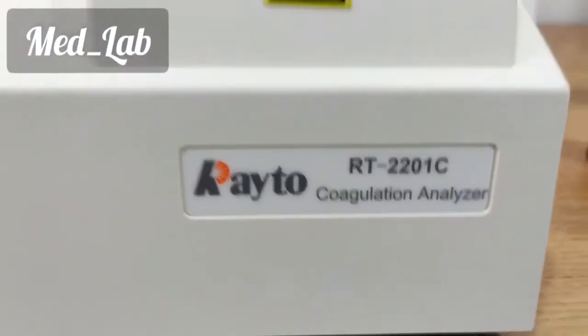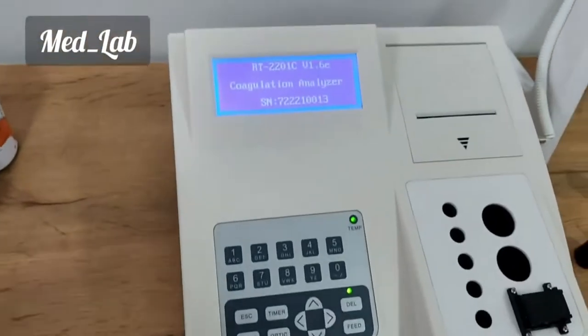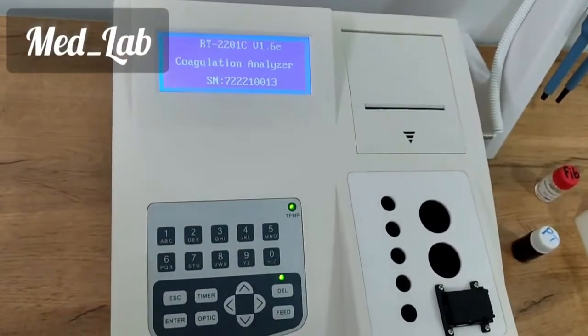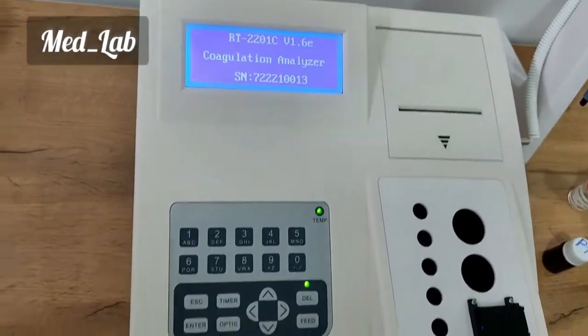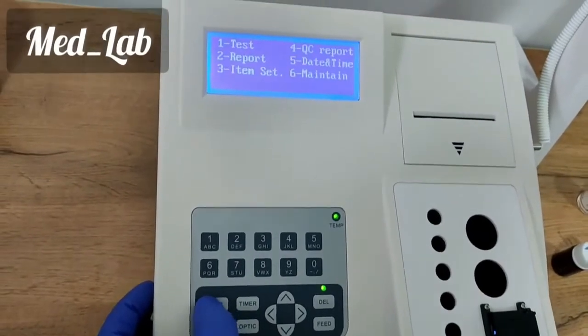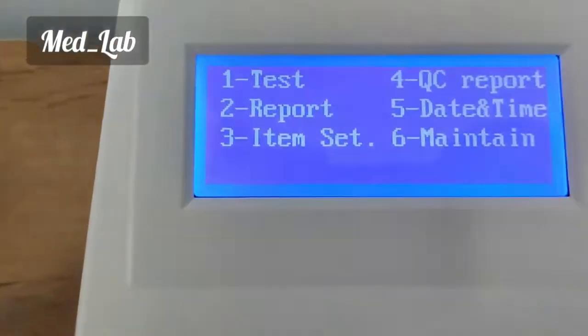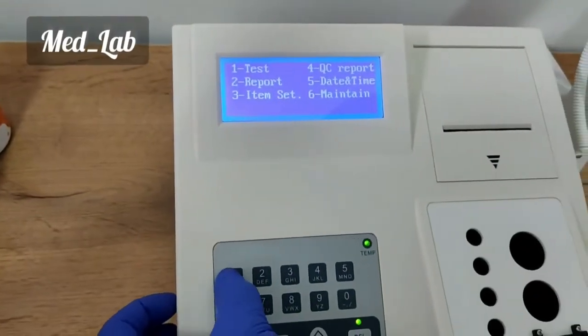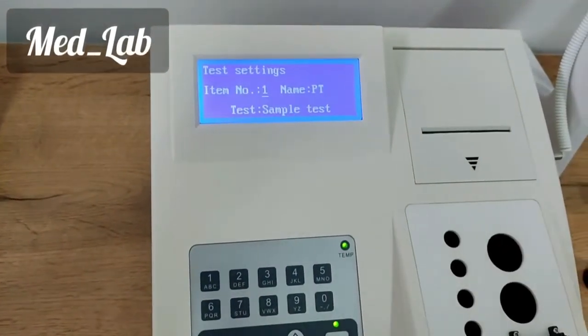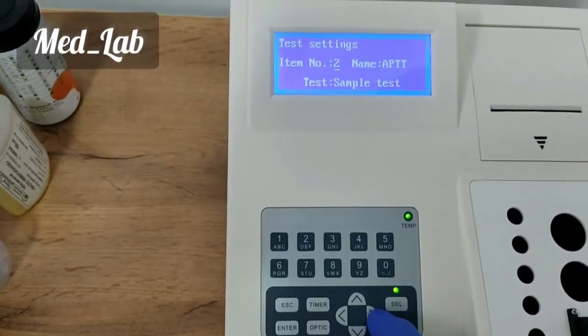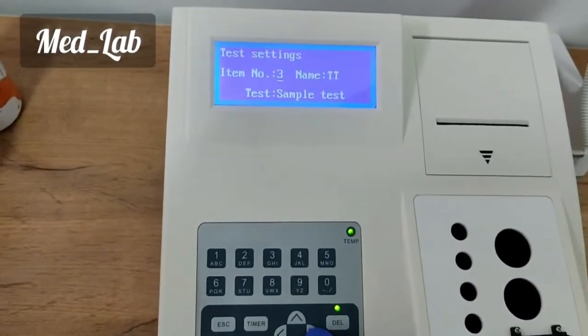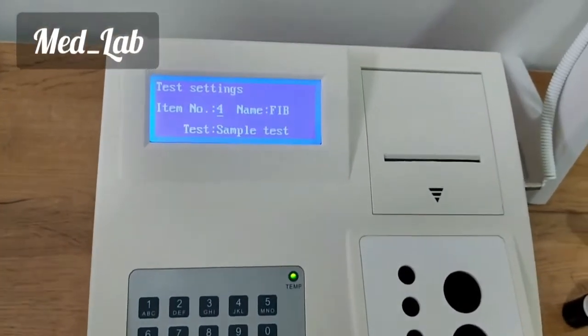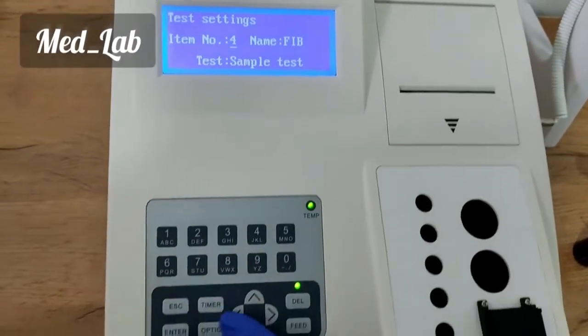RITO-RT2201C Coagulation Analyzer is a single-channel analyzer with a scattered light principle and percentage analysis, which ensures good results. Test parameters include but are not limited to prothrombin time, active partial thromboplastin time, D-dimer, and International Normalized Ratio or INR test.